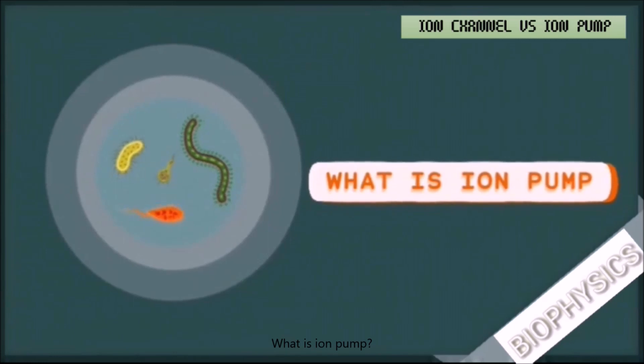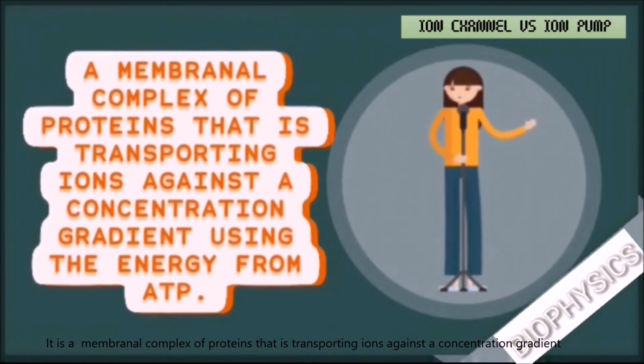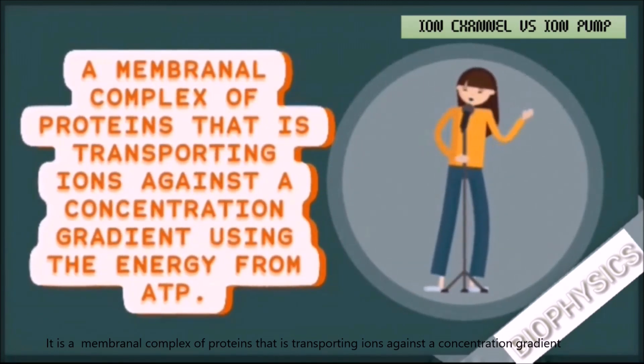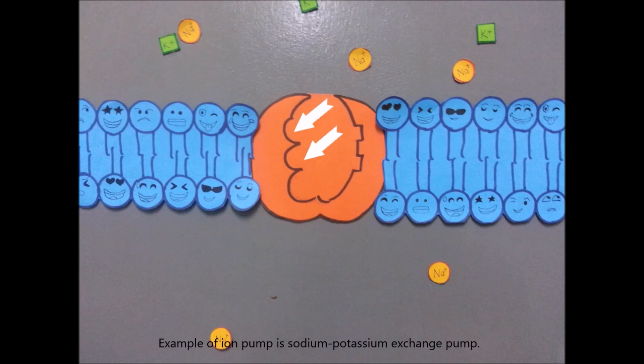What is ion pump? It is a membrane complex of protein that is transporting ions against a concentration gradient using the energy from ATP. An example of ion pump is the sodium potassium exchange pump.